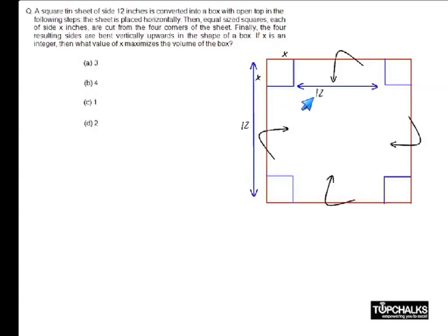whose base will have dimension 12-2x. This will also be 12-2x and the height of this rectangular box will be x. So we want to maximize the volume of the box. The volume of the box would be x, the height, into 12-2x into 12-2x.